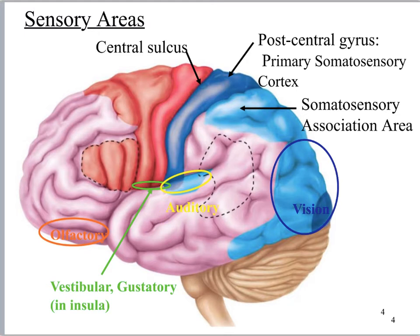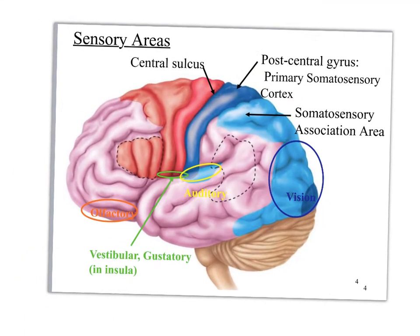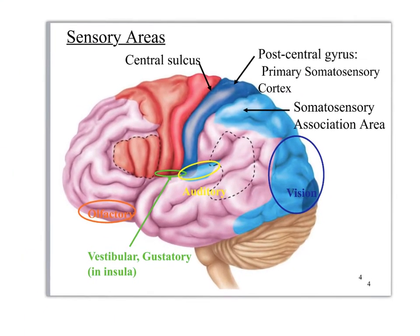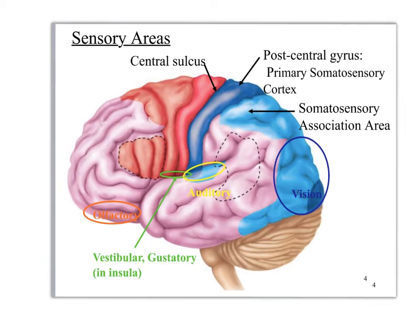So here we are looking at the cerebrum. This is a lateral view of the left side of the brain, and it's really highlighting the cerebrum. Down here you have the cerebellum, and down here is your brainstem.